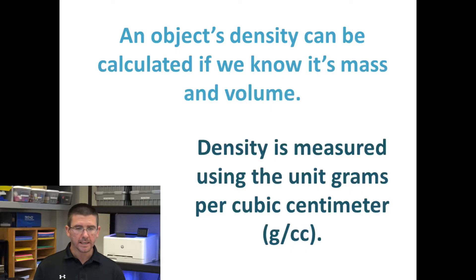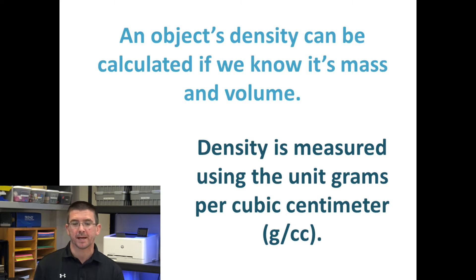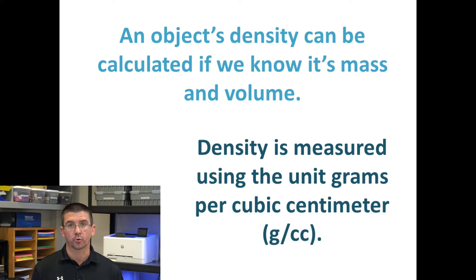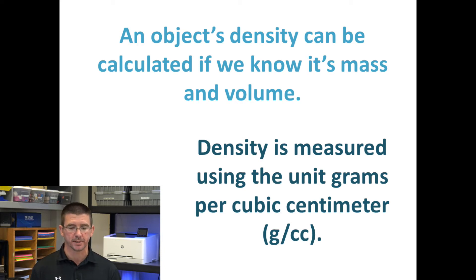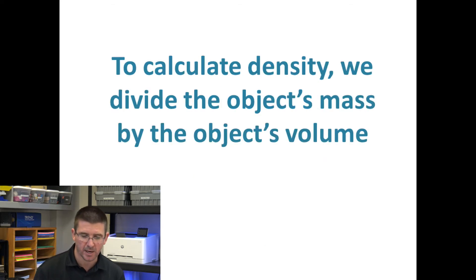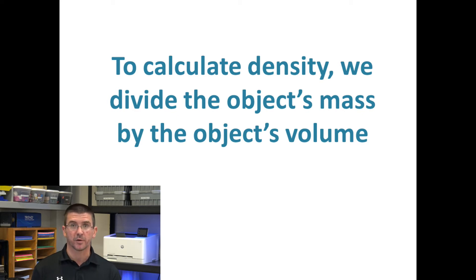So that's this idea of density — the relationship between the amount of mass and a certain amount of space. We can actually calculate an object's density if we know its mass and its volume. We measure density in units of grams per cubic centimeter, meaning in every cubic centimeter of a substance, what is the mass in grams? To calculate density, all we have to do is divide the object's mass by the object's volume.